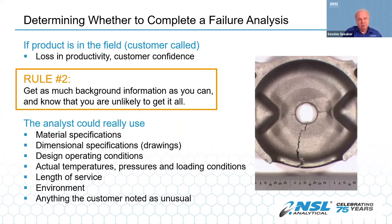The type most people think about first is if the product failure occurs in the field. You'll need a lot of communication with your customer — you may lose their confidence. Some customers are more forgiving than others. From here on, we'll just assume that your company has decided it needs to be investigated. We come to rule number two: get as much background information as you can, and know that you are unlikely to get all the information you're going to need.